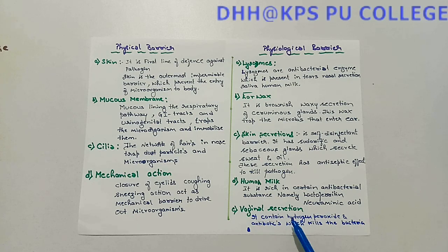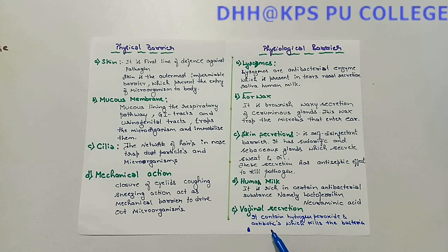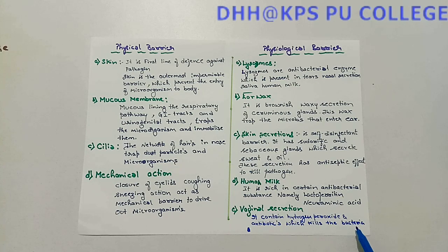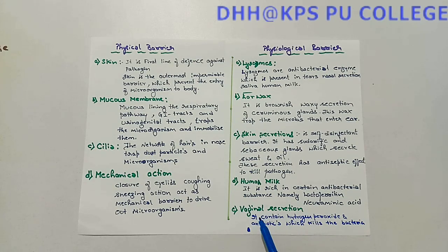The next physiological barrier is vaginal secretion. The vaginal mucous membrane secretes two types of substances: hydrogen peroxide and antibiotics, which kill pathogens. It also alters the pH of the uterus, making it unsuitable for the growth of pathogens.